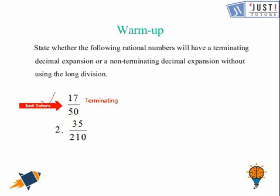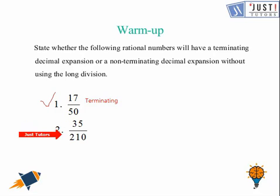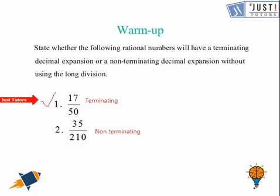And for this one, 35 over 210 — first you are going to make the simplest form out of it. Then if you look at the denominator and factorize it, you will not get the form which is 2 raised to the power n times 5 raised to the power m. That means this is non-terminating.